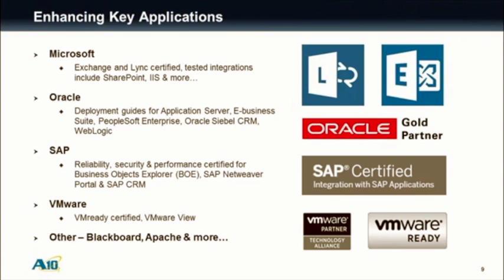One of the key uses of application delivery controllers is supporting the most popular applications on the network today, ranging from Microsoft, Oracle, SAP, and more. A10 is certified in many leading applications which offer certifications — for example, Microsoft Exchange, Microsoft Lync, and SAP. The A10 Thunder devices are certified to work with them and improve performance. We also offer smart templates for streamlined deployment and step-by-step deployment guides for all of these products, enabling you to deploy these applications quickly and easily.